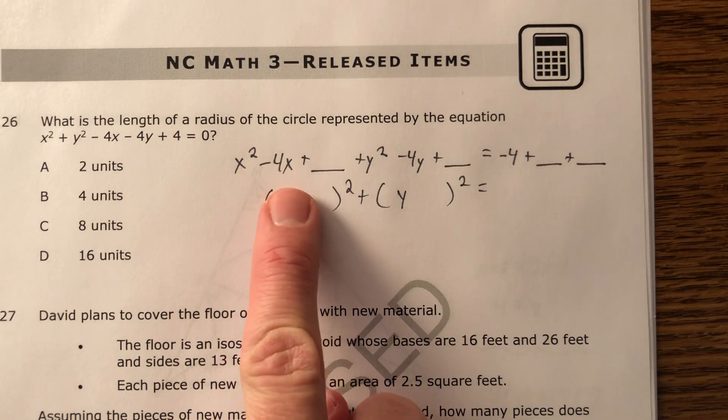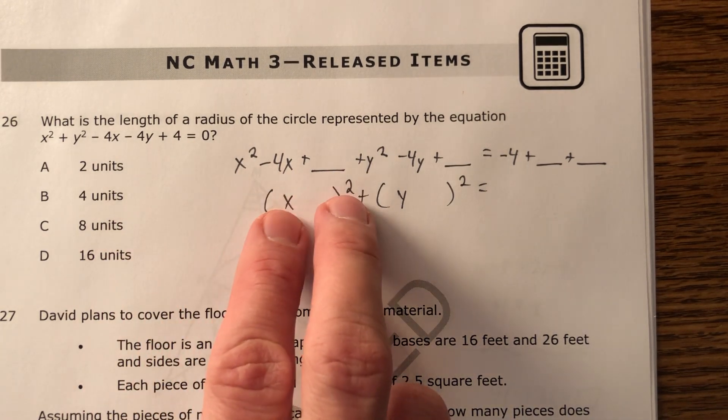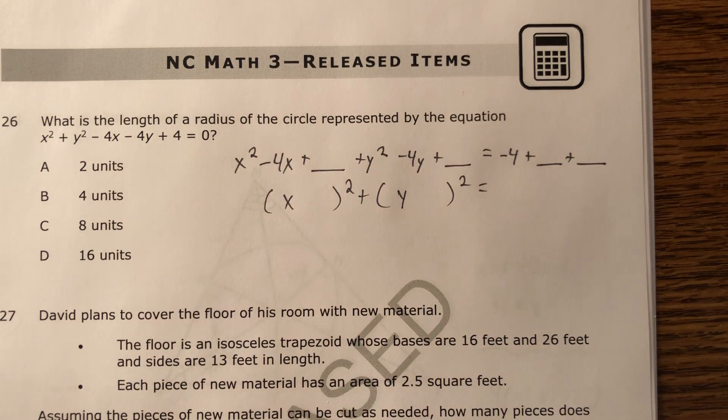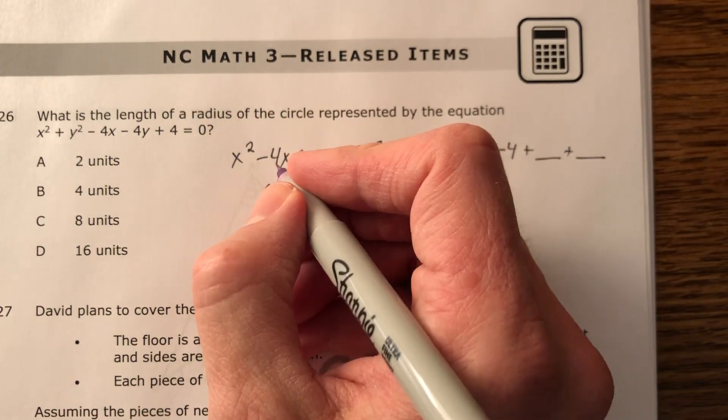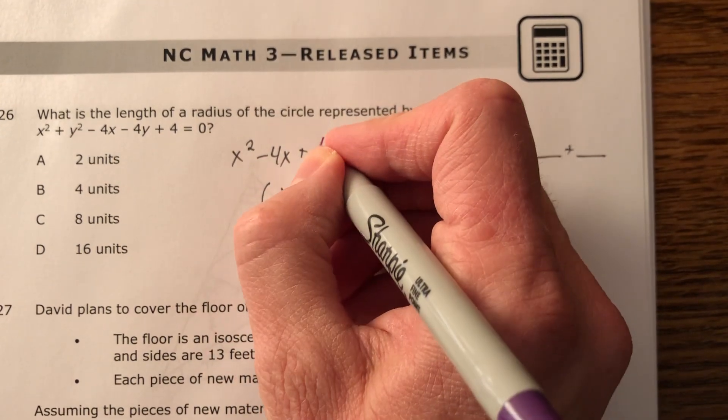And that would factor into a binomial times a binomial, and they'd be the same thing. So it would be a perfect square. And I'll take half of negative 4, I get negative 2. Square it, gives me 4.